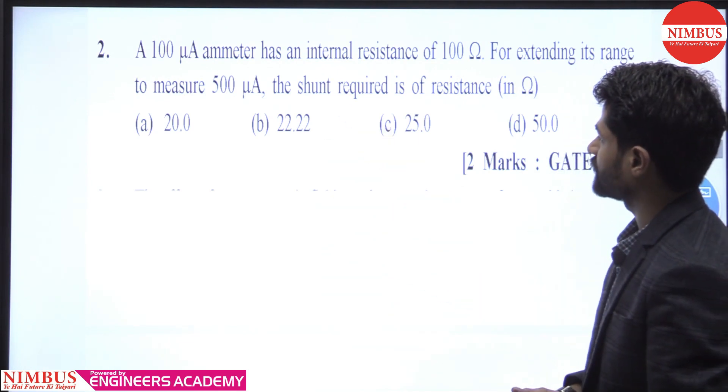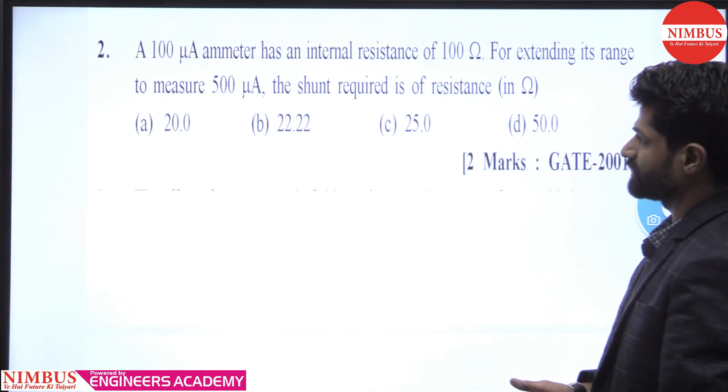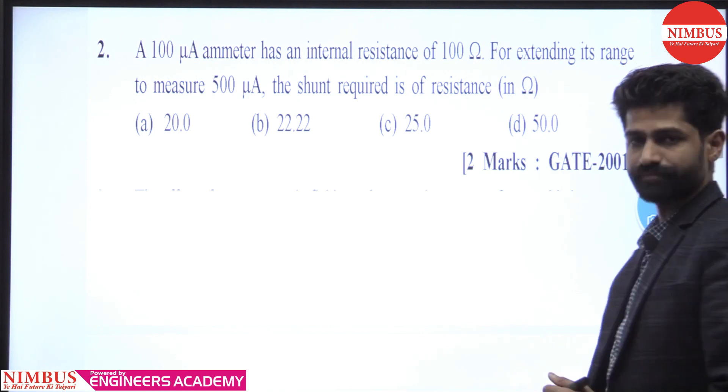A 100 microampere ammeter has an internal resistance of 100 ohm. For extending its range to measure 500 microampere, the shunt resistance required is, in ohm?